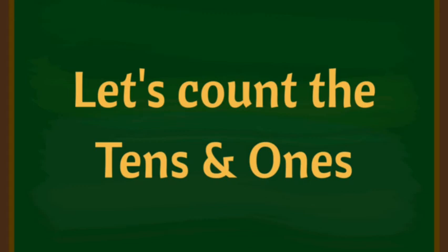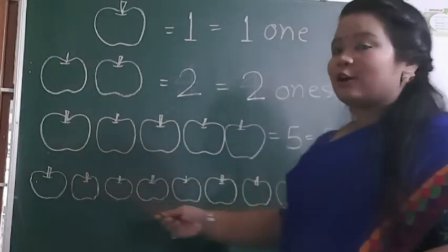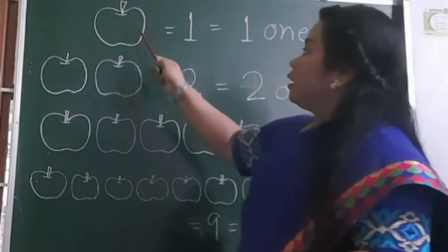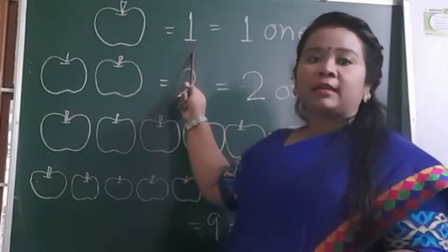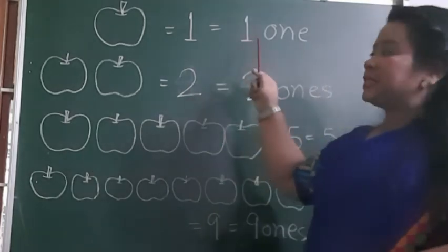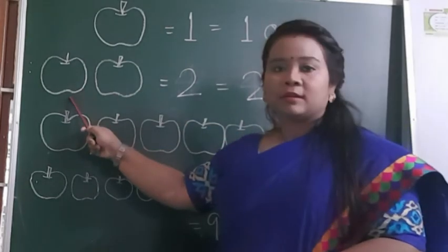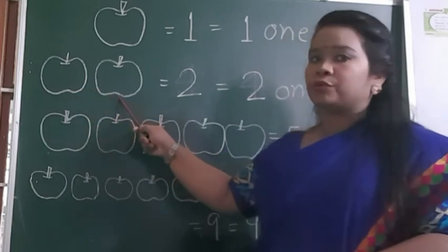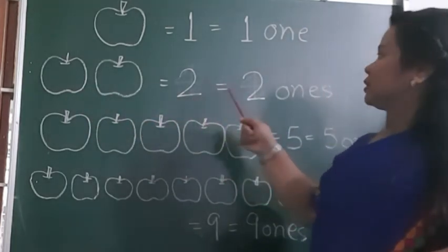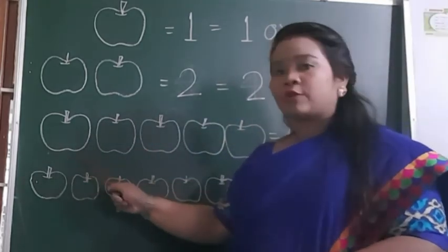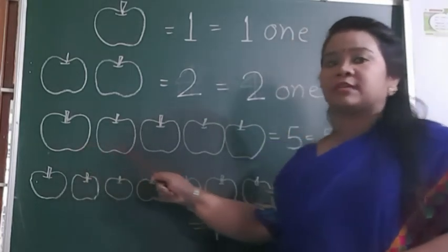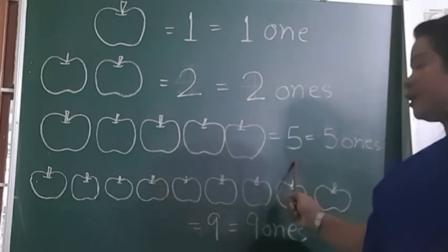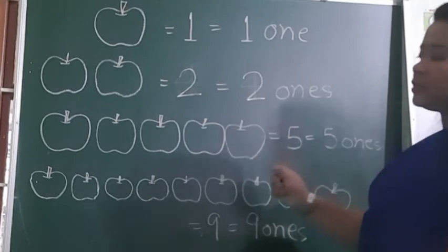Let's count the tens and ones. Do you see the board here? There are lots of apples. How many apples do we have? I have only one apple — one apple means you write the number 1, and that means one ones. Next I have two apples — I wrote 2, and 2 means two ones. Again let's count: I counted five apples. Five is equal to five ones.